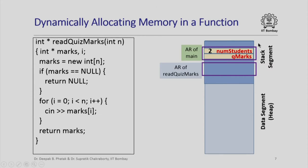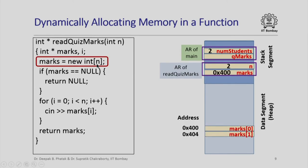The stack is growing from top to bottom. In the activation record of `read_quiz_marks` I have space for the formal parameter n, which has the value 2, space for `marks`, and also space for i (not shown to keep the diagram simple). When I execute the dynamic allocation statement, an array of size n = 2 is allocated in the data segment. The addresses 0x400 to 0x403 store the first element and 0x404 to 0x407 store the second element. The address of the first element, 0x400, is copied into `marks`.